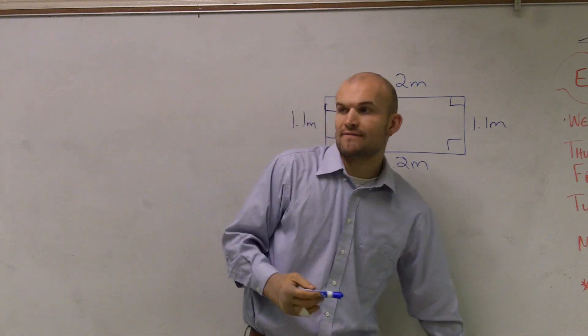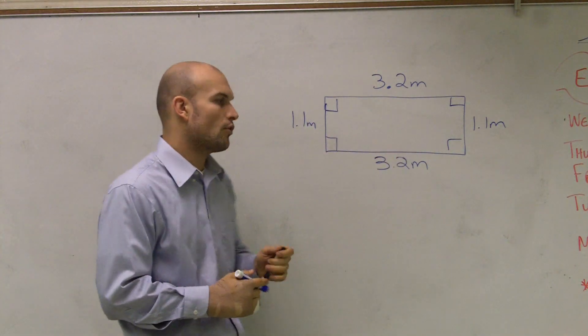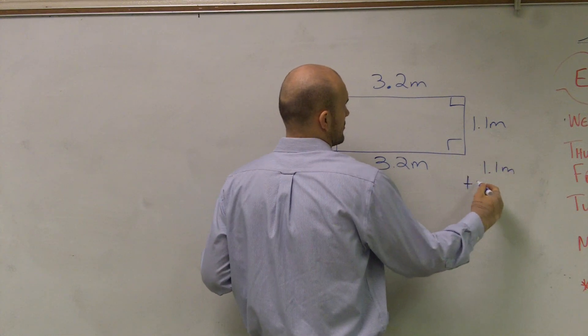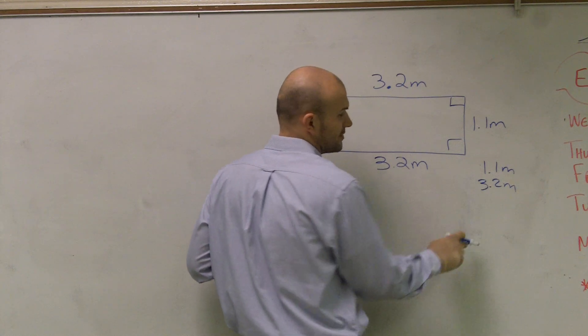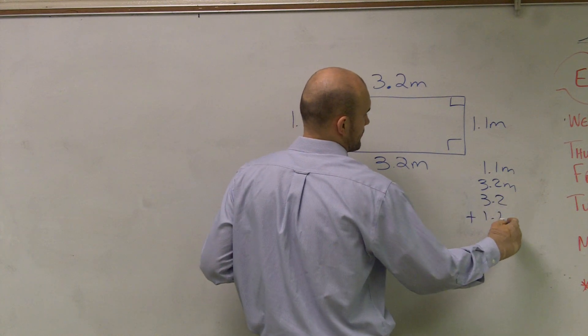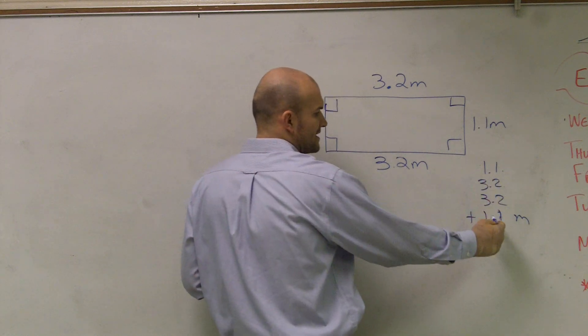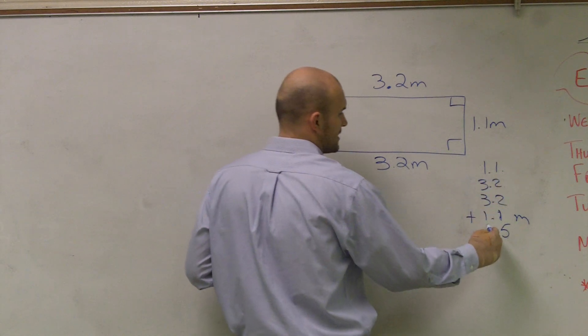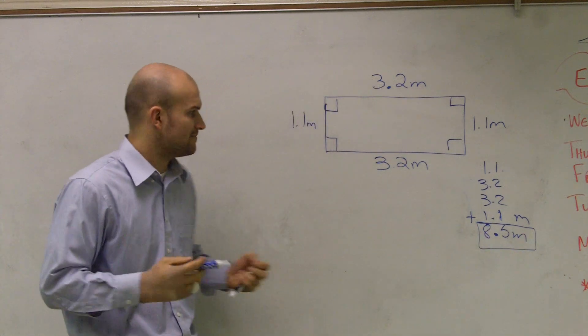So now, if I want to find the distance around my rectangle, what I can do is just simply add up all four of the lengths. So 1.1 meters plus 3.2. And I'll just write the plus all the way at the end. You don't need to write plus every single time. And these are all meters, so I don't need to keep on writing this. But then, if I just add these all up, the total distance around my rectangle is going to be 8.5 meters.